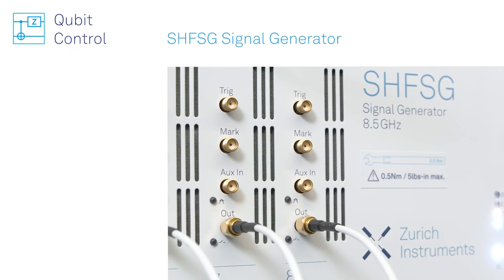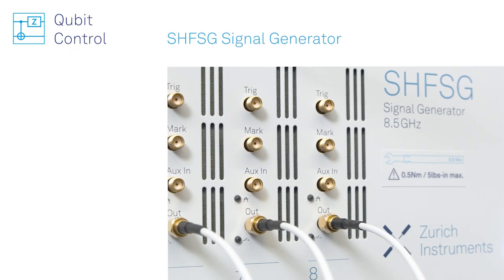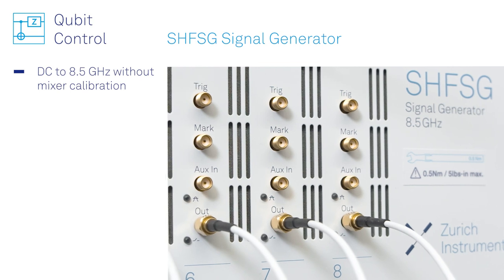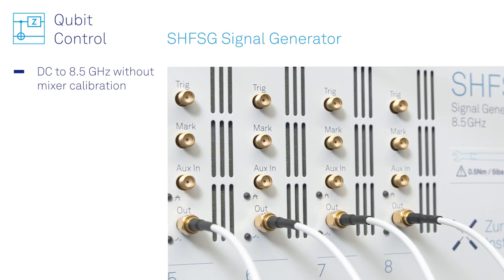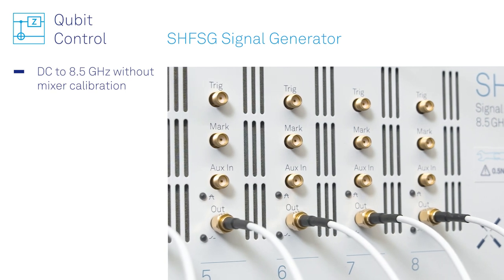The SHF-SG signal generator integrates a full room temperature setup to provide pulsed control signals for single qubit and all microwave two qubit gates from DC up to 8.5 gigahertz.